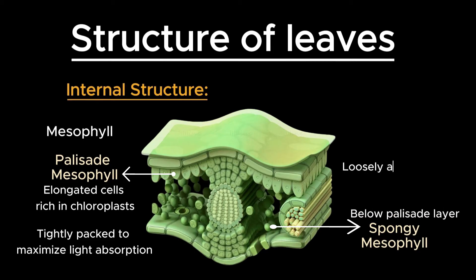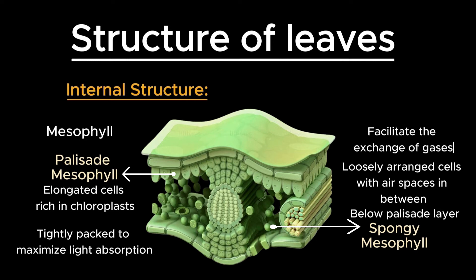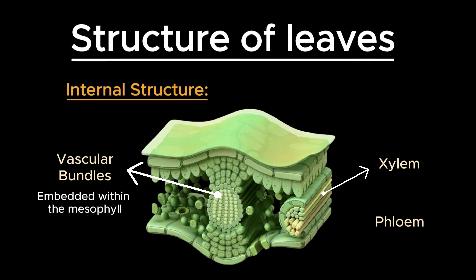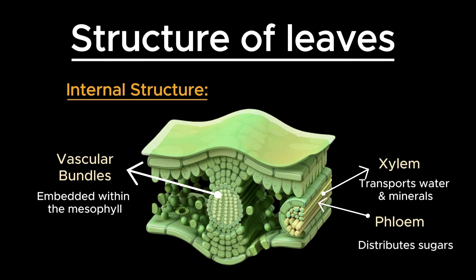The spongy mesophyll, located below the palisade layer, has loosely arranged cells with air spaces in between. These spaces facilitate the exchange of gases necessary for photosynthesis and respiration. Vascular bundles, also known as veins, are embedded within the mesophyll and consist of xylem and phloem tissues. Xylem transports water and minerals from the roots to the leaves, while phloem distributes sugars from the leaves to other parts of the plant.